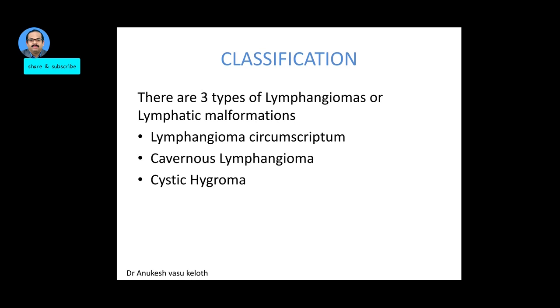Congenital lymphangiomas can be classified into three types: lymphangioma circumscriptum, cavernous lymphangioma, and cystic hygroma.